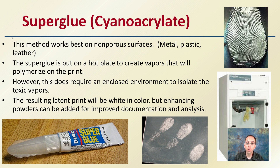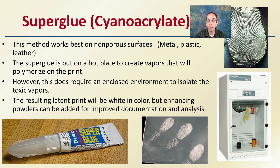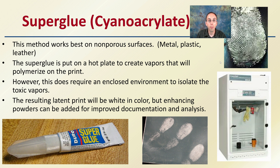The superglue method, or cyanoacrylate method, works best on non-porous surfaces such as metals, plastic, and leathers. Superglue is placed on a hot plate to create vapors that polymerize the print. However, those vapors need to be kept in a contained area, so this is great for objects that can be moved. It does require an enclosed environment to isolate those toxic vapors. The resulting latent print will be white in color, but enhancing powders can be added for documentation and analysis.